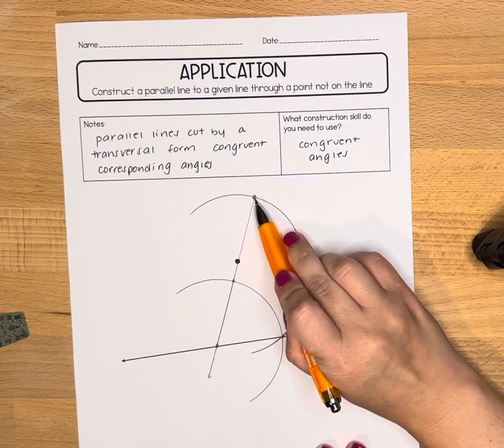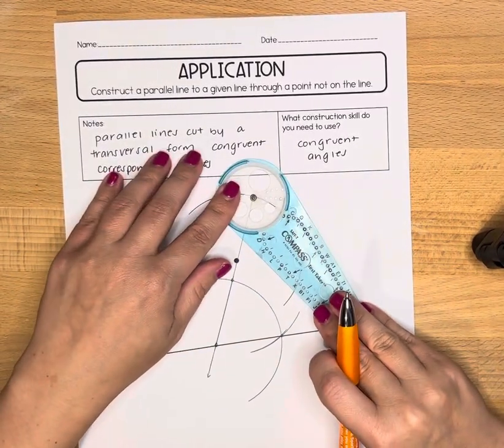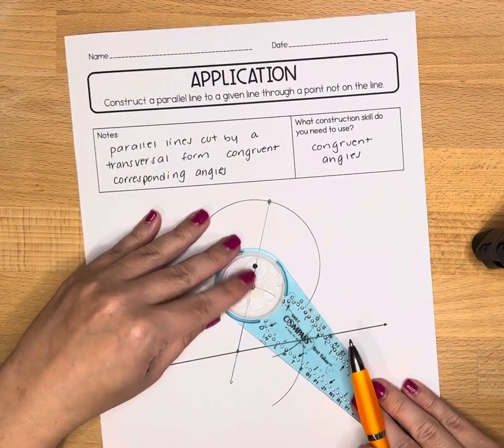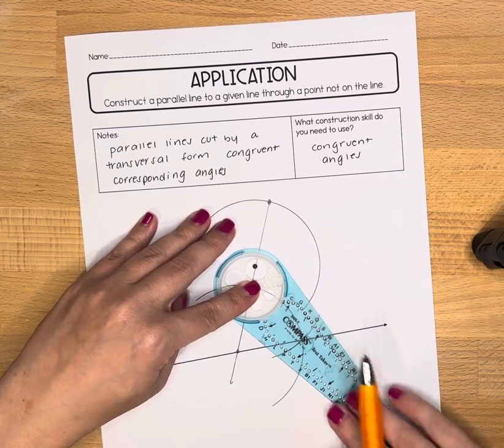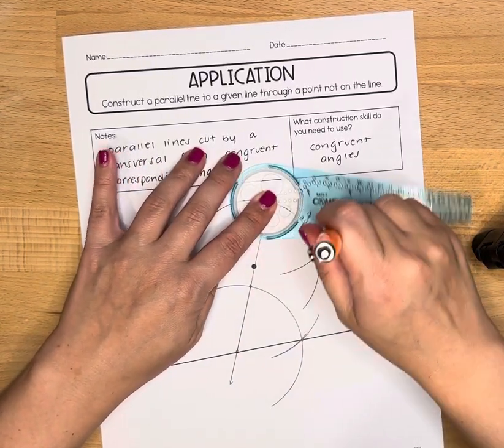Where that point crossed the transversal, you're going to put the gold ring of your compass there and you're going to draw an arc like we drew here. So if you forget what measurement that is, go here, line it back up, and you are going to draw an arc.